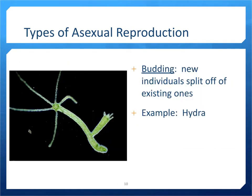Another type of asexual reproduction is called budding. An example is the hydra. It occurs when a new individual splits off of an existing individual. The adult hydra uses its tentacles to capture food, and the new hydra — a small clone — grows out of the side of the adult. When it is mature enough, it breaks off and becomes its own individual.